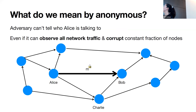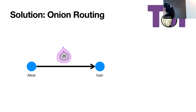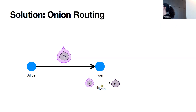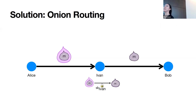Anonymity can be formalized as a game: the adversary specifies two users — Bob and Charlie — who Alice might be talking to. The challenger chooses one uniformly at random, the adversary observes a run of the protocol, and then tries to guess whether Bob or Charlie was chosen. The adversary shouldn't guess correctly with more than negligible probability above one half. One prominent solution is onion routing — used in Tor in practice — where Alice encrypts her message in layers and sends it through an intermediary server Ivan. When Ivan gets this onion, he peels it or decrypts it with his secret key to reveal the next layer and forwards it to Bob.